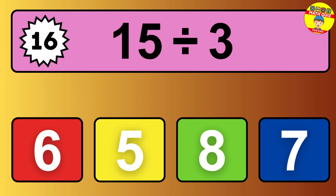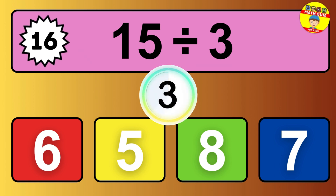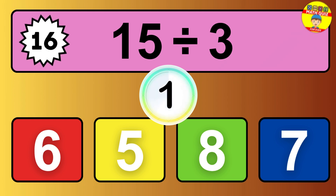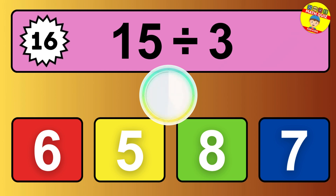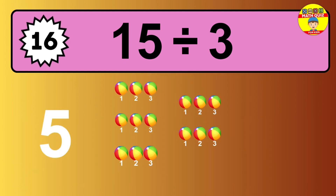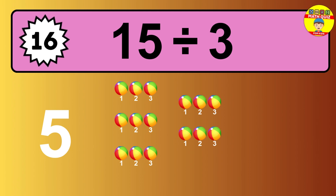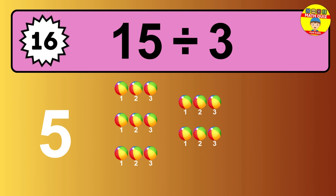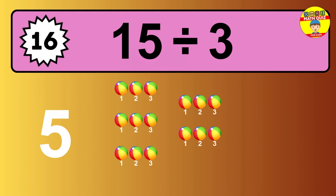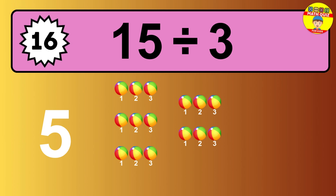15 divided by 3 — time to think. Let's go to the solution. Divide the number 15 by 3. Each group contains 3 units, so dividing 15 by 3 results in 5 equal groups. Thus, the result is 15 divided by 3 equals 5.